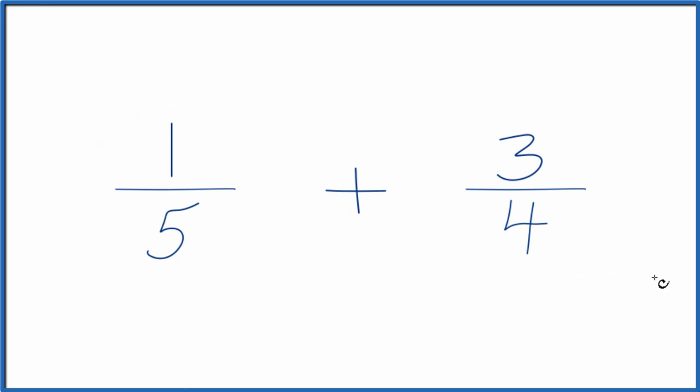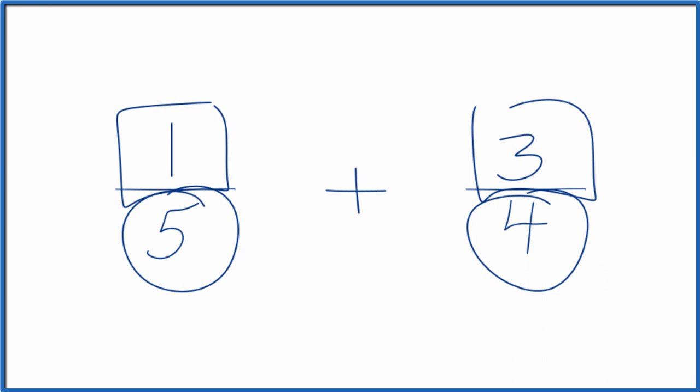When we're adding fractions, we want to end up having our denominator to be the same. So we want to have the same denominator, because then we can just add the numerators together, keep the denominator the same, and we'll find the sum for one-fifth plus three-fourths.